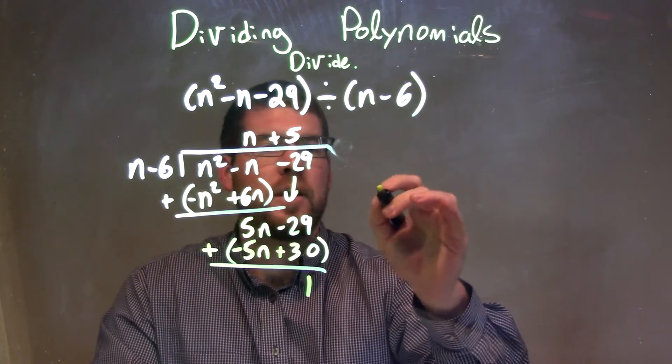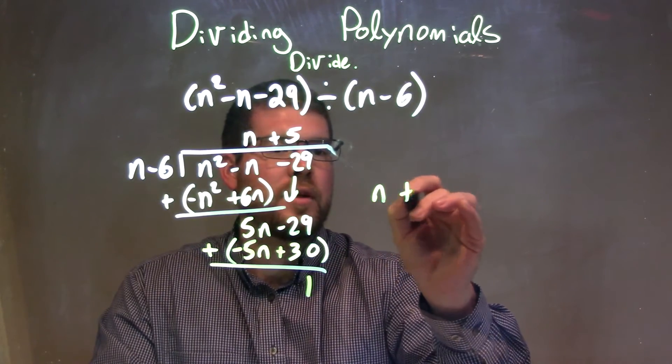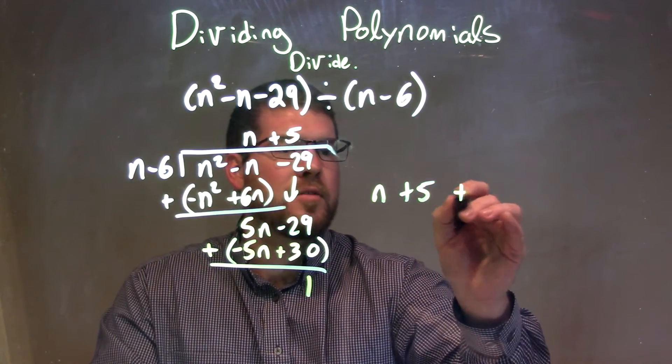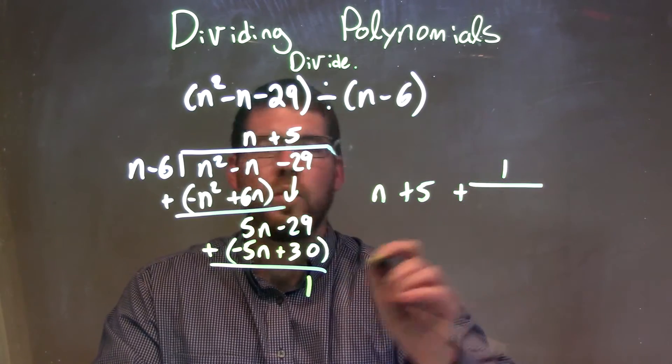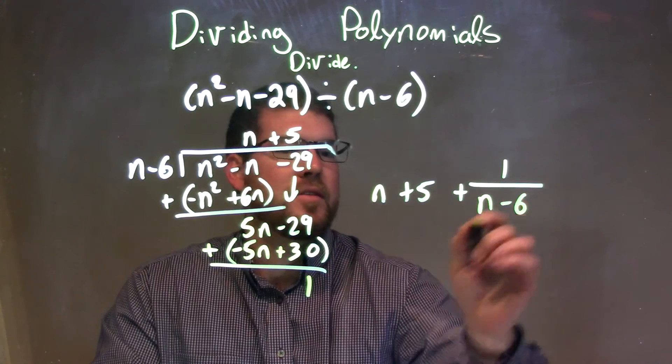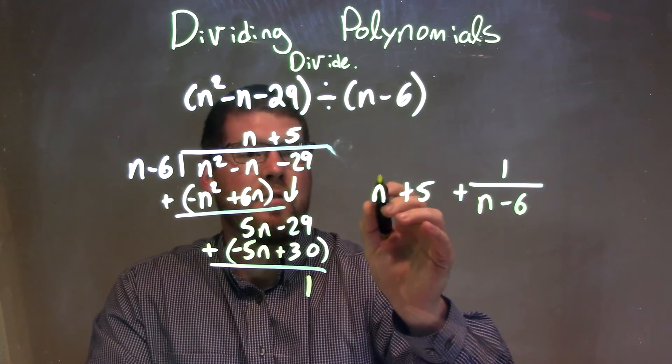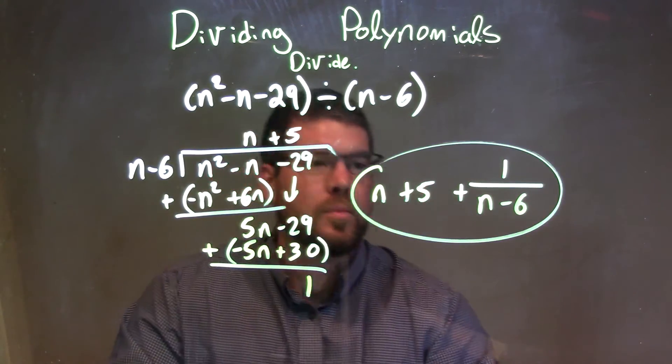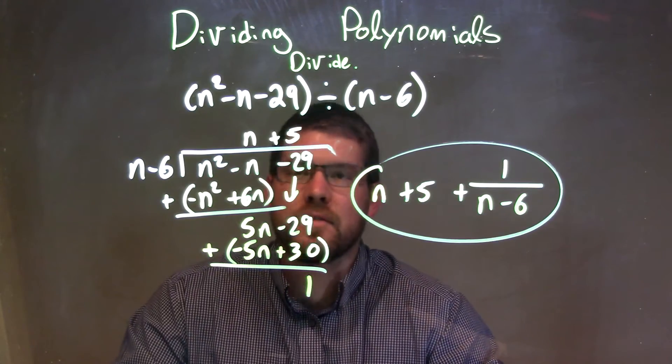So when we write our final answer, we have n plus 5 plus our remainder over what we're dividing by here, n minus 6. And there we have it. We have our final answer of n plus 5 plus 1 over n minus 6.